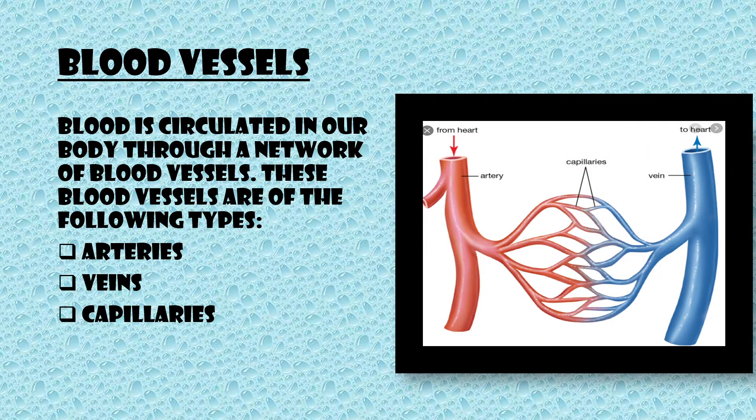Blood vessels: blood is circulated in our body through a network of blood vessels. These blood vessels are of three types: arteries, veins, and capillaries.